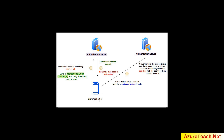Later, the client application sends another request to the authorization server — this is not a redirect request but a POST request — and inside it the client application includes the secret code. The authorization server returns the access token only if the secret code used to generate the authorization code matches the secret code in the current request. This is like the bank customer care asking for SSN. The other mobile application doesn't know the secret code and cannot steal the access token.